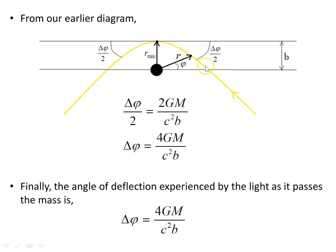So Δφ/2 = 2GM/(c²B), giving Δφ = 4GM/(c²B). This tells us the amount of deflection is proportional to the Schwarzschild mass and inversely proportional to the impact parameter B. Note that this is a very exaggerated diagram — for small deflections this formula applies, but the diagram shows a large angle change for illustration purposes.